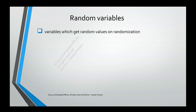A Random Variable is a variable which will get random values whenever you are randomizing. Whenever you are calling the randomization method — in System Verilog we have RANDOMIZE — which is a method to randomize your variable. Whenever you call that method, whatever variables get randomized are called Random Variables.